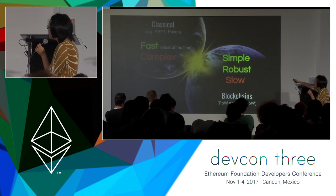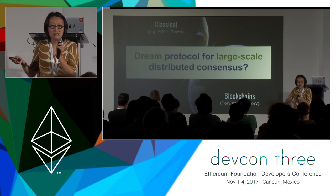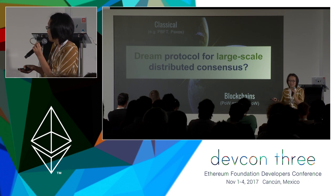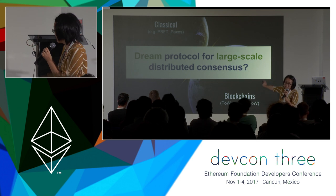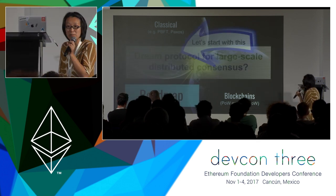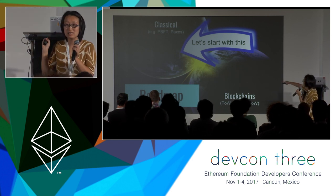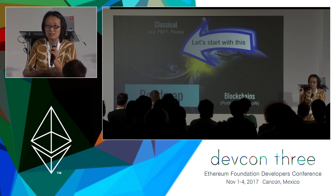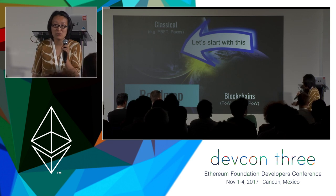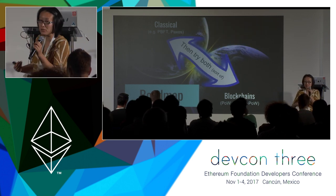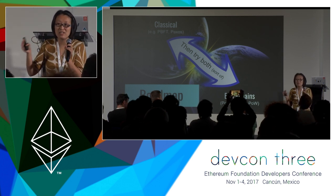This is the overall landscape and what it tells us is that the dream protocol for large scale is still eluding us. In the rest of the talk I'm going to try to answer this question. The plan is to start talking about how classical consensus works, get stuck, and then combine the best of both worlds to get a new consensus protocol. Thunderella is an extremely simple consensus protocol — at the end of the talk I'll summarize it in two sentences.